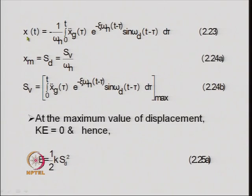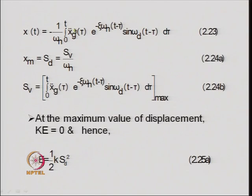Using that concept, x(t) is obtained via this integration. The maximum displacement S_d equals S_v divided by omega_n. S_v is the maximum value of the integral over all time t. Performing this integration at every time t and taking the maximum gives S_v, and dividing by omega_n gives the maximum displacement. This maximum displacement for different values of omega can be plotted for a given damping ratio.